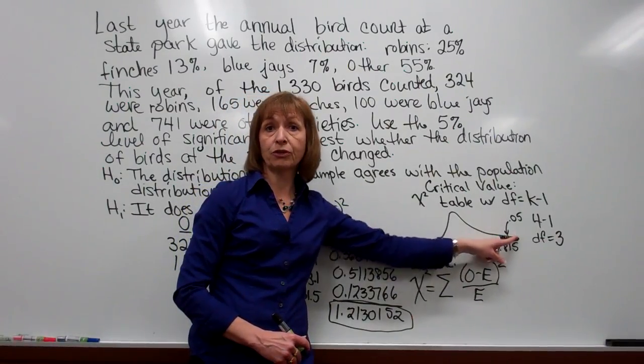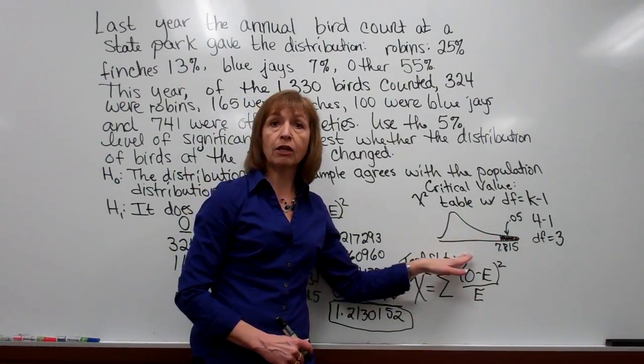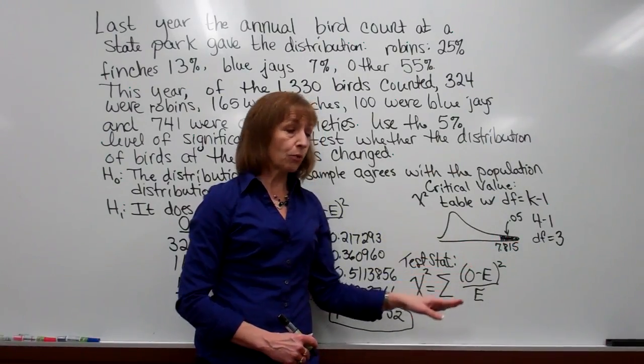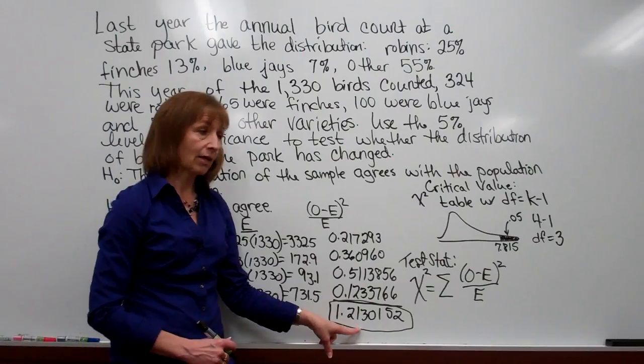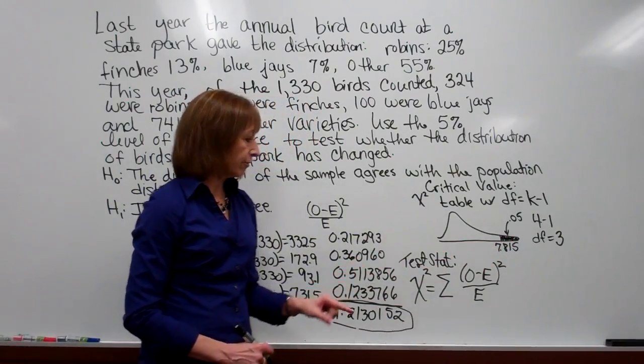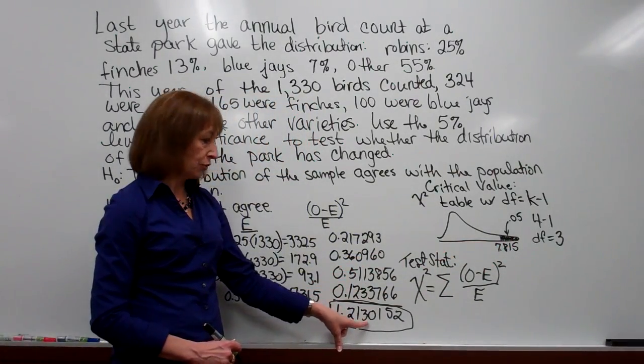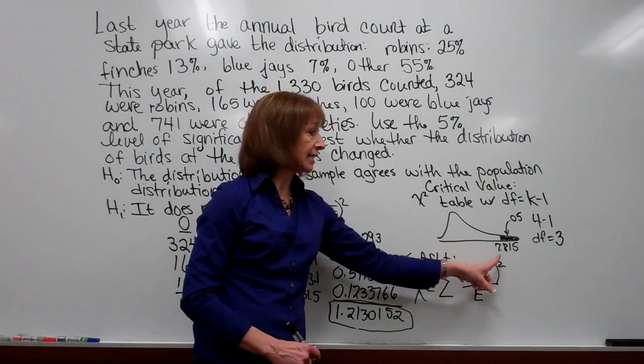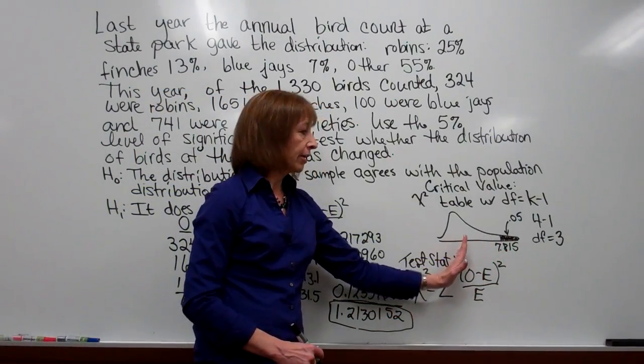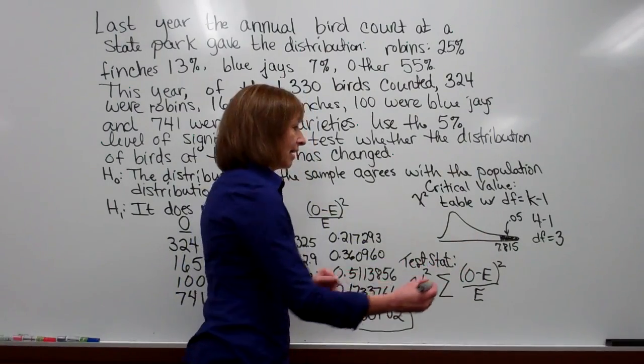So when we're placing our test statistic with regards to the critical value, 1.2130152 is smaller than 7.815, so it'll be to the left of it on the number line.